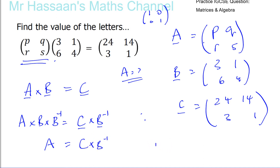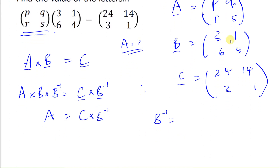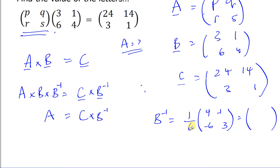I need to find what the inverse of B is before I can proceed. The inverse of B equals 1 over the determinant. The determinant of this matrix is 3 times 4 = 12, minus 1 times 6 = 6, so 12 minus 6 = 6. Then you swap the leading diagonal — the 4 and 3 swap — and the other two entries change sign. Written as fractions: two-thirds, minus one-sixth, minus 1, and one-half.